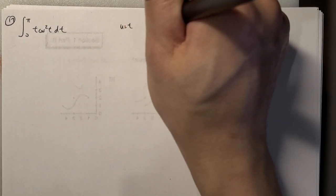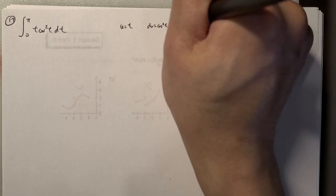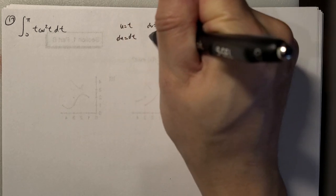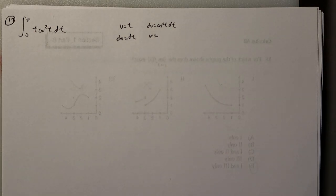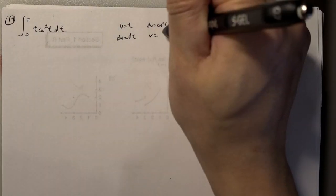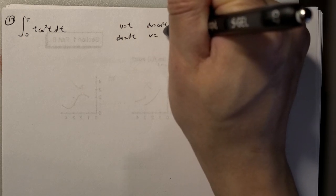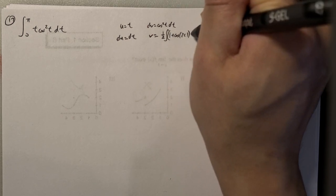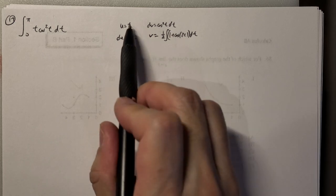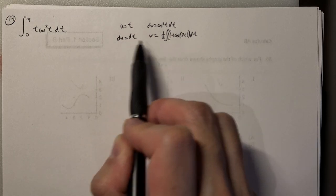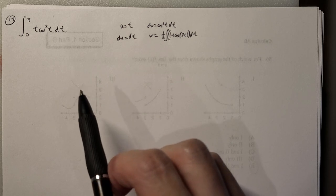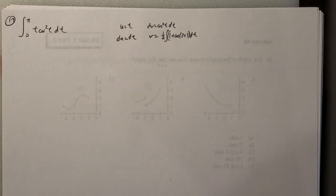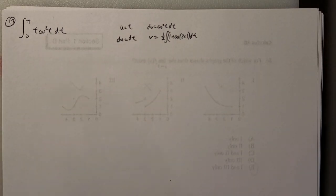u is t, dv would be cos²(t) dt. So we get du = dt easily. And v — we have to use the half-angle identity here. So v = ½∫(1 + cos(2t)) dt. I actually solved this one beforehand because I wasn't 100% sure, and I did it a little differently. So maybe I'll go over that afterward to show different ways to approach this.